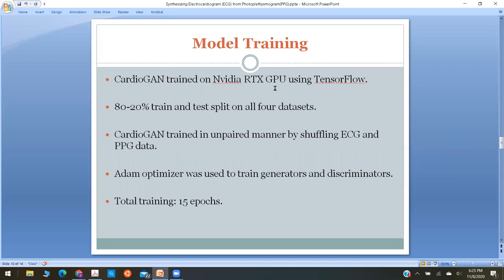To perform the training, CardioGAN was trained on GPU using TensorFlow. The entire data was split into train and test under an 80-20 ratio. Validation was also carried out after the testing. As I mentioned before, CardioGAN was trained in an unpaired manner. The ADAM optimizer was used, and training was carried out for 15 epochs.